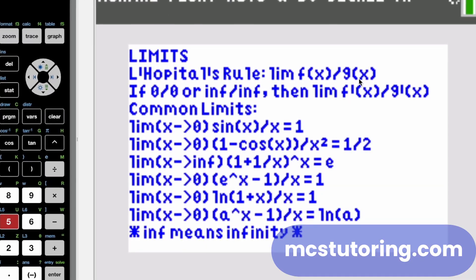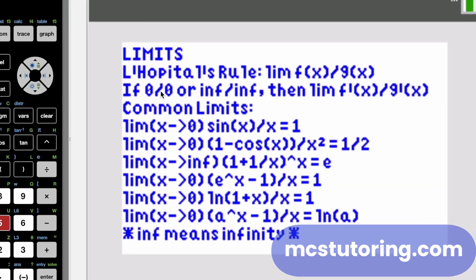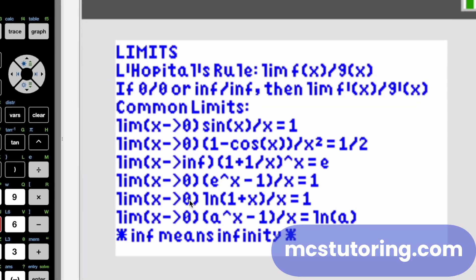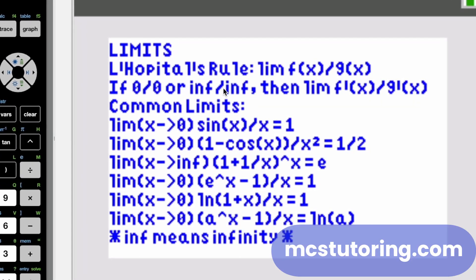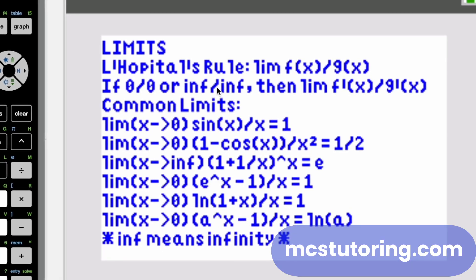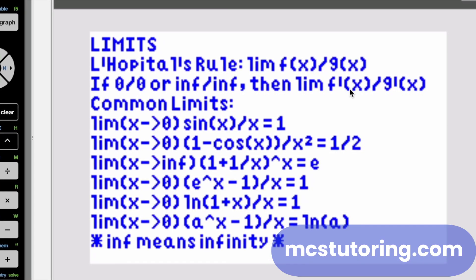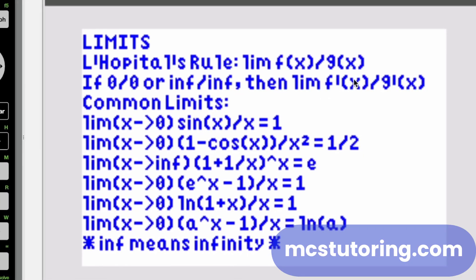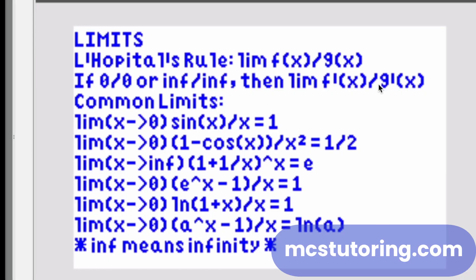So it's a limit of F of X over G of X. And if it's zero over zero or inf over inf, which means infinity, don't have an infinity symbol on the calculator as far as I know, on this one at least. So infinity over infinity, then it's the limit of F prime of X over G prime of X.